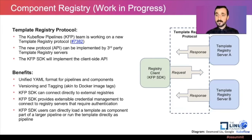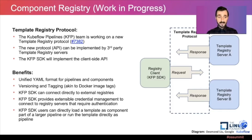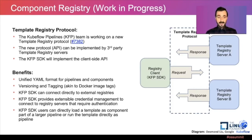This new component registry, as proposed by the Kubeflow Pipelines team, aims to address some of those problems. There are two parts: the API being implemented on the client side by the Kubeflow Pipelines SDK, and the server side that can be implemented by third-party registries. You can follow up on the design doc at Kubeflow Pipelines issue 7382. The benefits will be that the YAML format will be unified between pipelines and components, components and pipelines can be versioned and tagged, and there will be direct integration in the SDK so users can seamlessly download components from a third-party registry by connecting to a host, searching for components, finding versions, and downloading them.